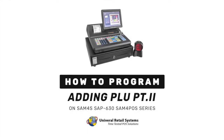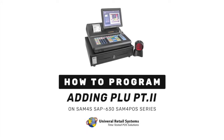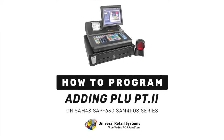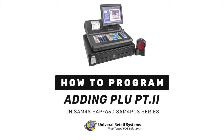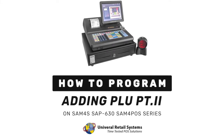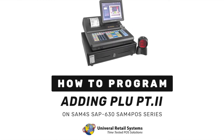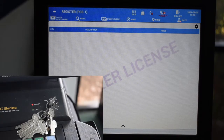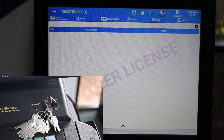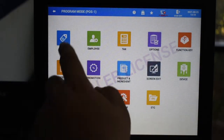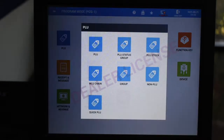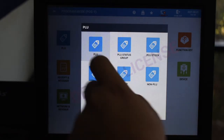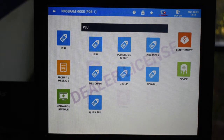Hi everyone, this is Christian from Universal Retail Systems with another video on the SAP 630. This is a continuation of the quick add video. Let's begin by turning the key to P mode and pressing on the POU button. Press POU again and you'll be on the POU programming screen.